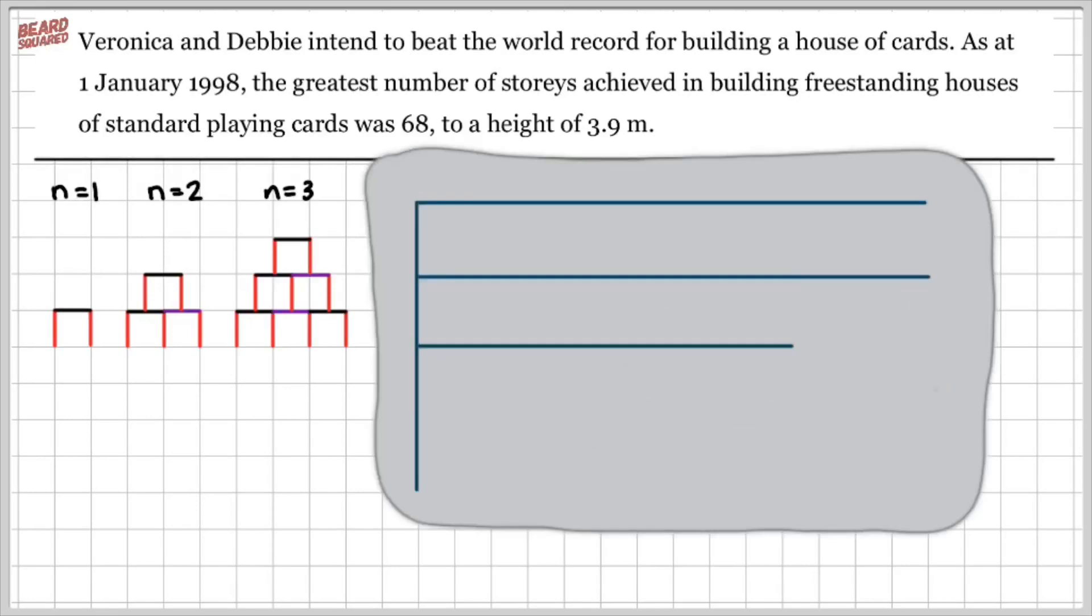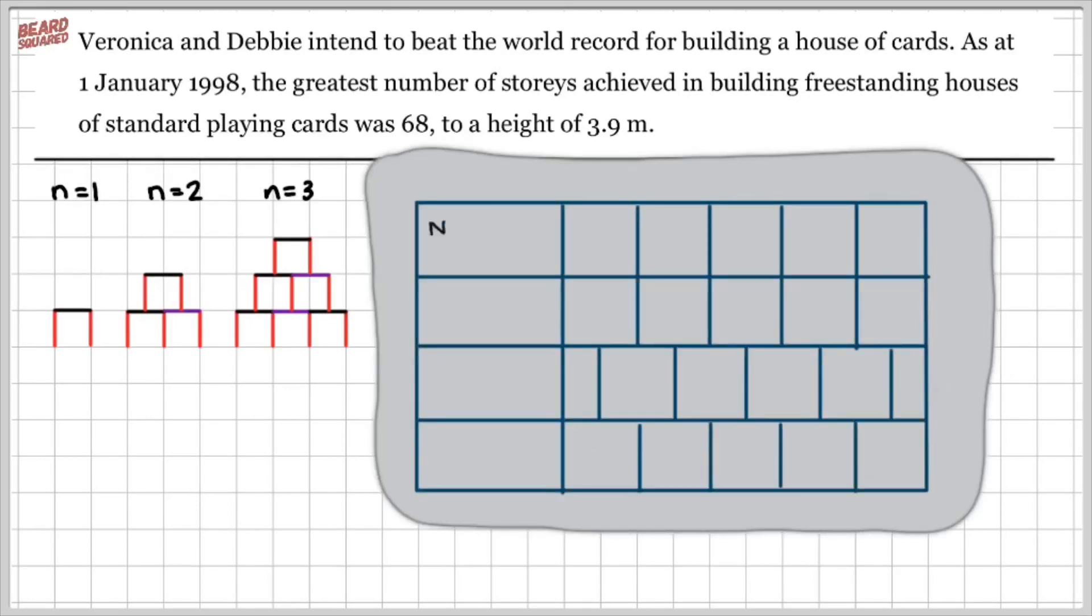Now we can do a table of values to find out the number of stories and the number of cards required. Let's find out for the first five stories how many cards we need. We know that for one story, there's three cards. For two stories, we have eight cards. And for three stories, we have 15 cards.